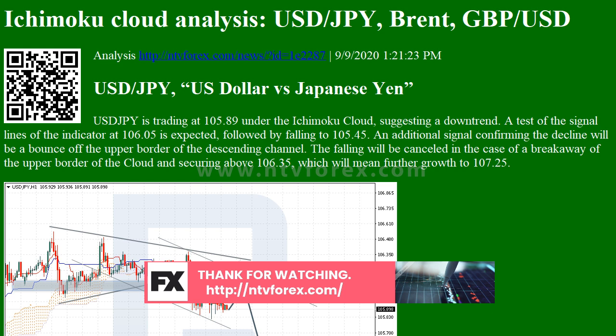Brent is trading at 107.75 under the Ichimoku cloud, suggesting a downtrend. A test of the signal lines of the indicator at 40.45 is expected, followed by falling to 36.55. An additional signal confirming the decline will be a bounce off the upper border of the descending channel.